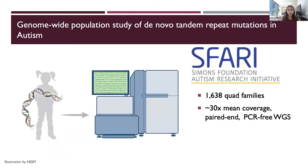To do this, we gathered whole genome sequencing data from the SPARK consortium, which had over a thousand families, with data from the father, mother, an autism-affected child, and a healthy child. My dissertation goals were to build a framework to identify new de novo tandem repeat mutations in these large whole genome sequencing datasets, and then to examine patterns of de novo mutations in healthy children versus children affected by autism.